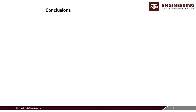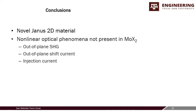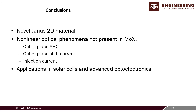In conclusion, we performed calculations on this novel Janus-based material, demonstrating nonlinear optical phenomena — including strong second harmonic generation and shift photocurrent — that do not exist in the bulk counterpart. The material also exhibits an injection current not present in MoS₂, further expanding its potential device applications.